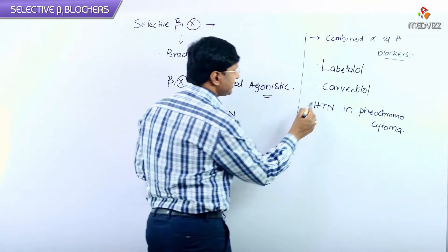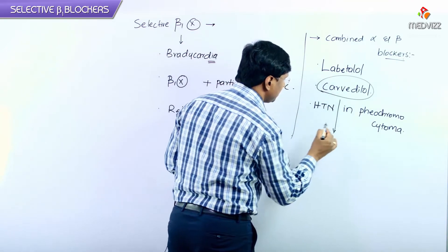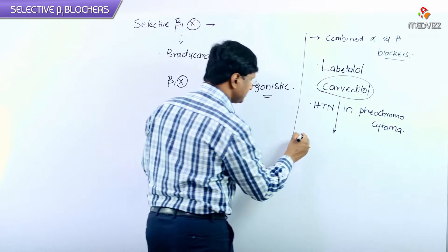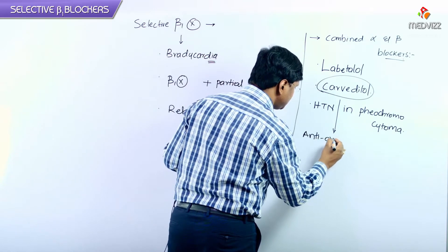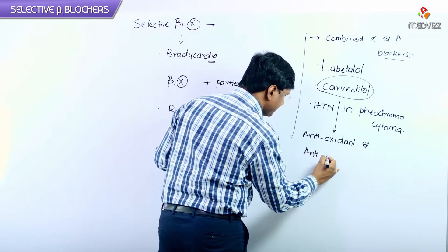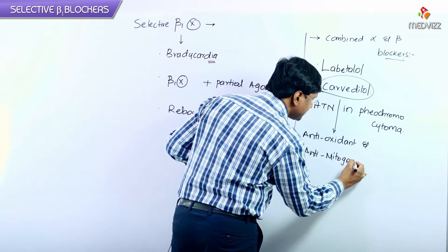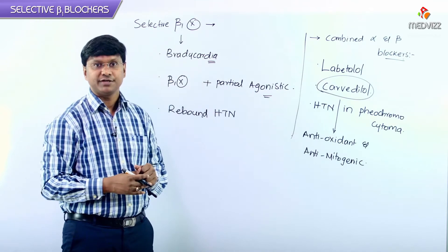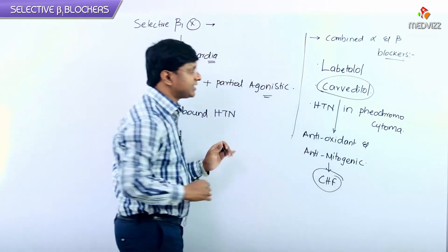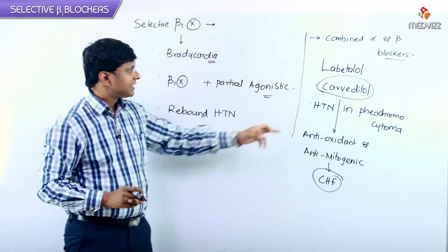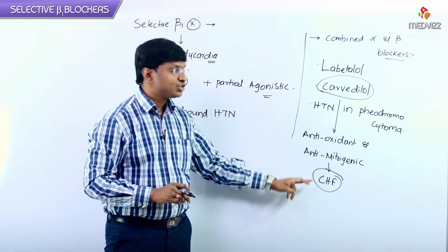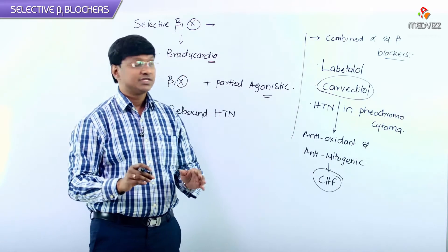Carvedilol has antioxidant and anti-mitogenic properties. Because of these antioxidant and anti-mitogenic properties, carvedilol is used in patients with congestive heart failure. This is why carvedilol is useful in congestive heart failure.